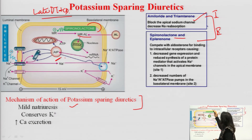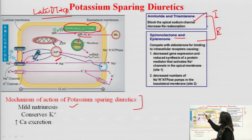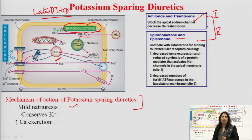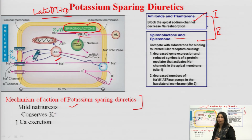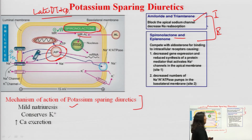Our drug is spironolactone, which is a competitive inhibitor of the mineralocorticoid receptor. Spironolactone competitively binds with the mineralocorticoid receptor and inhibits the action of aldosterone, thus inhibiting the formation and synthesis of aldosterone-induced protein.